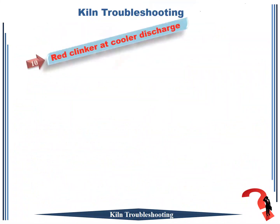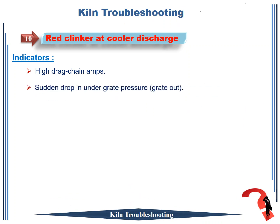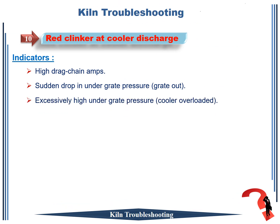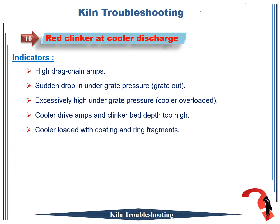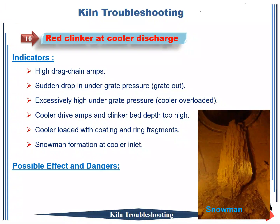Rotary kiln troubleshooting number 10: red clinker at cooler discharge. The important indicators: 1. high drag chain amps; 2. sudden drop in under-grate pressure output; 3. excessively high under-grate pressure, cooler overloaded; 4. cooler drive amps and clinker bed depth too high; 5. cooler loaded with coating and ring fragments; 6. snowman formation at cooler inlet.